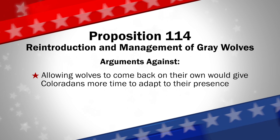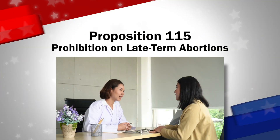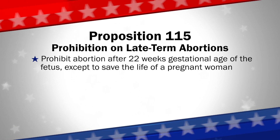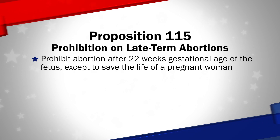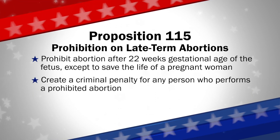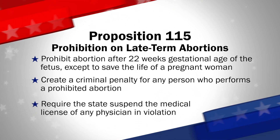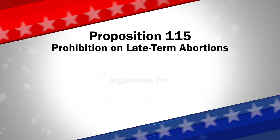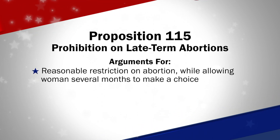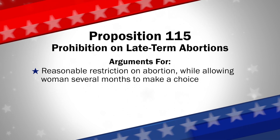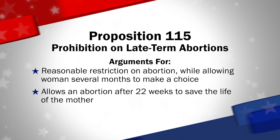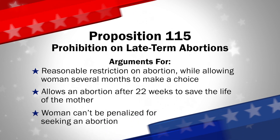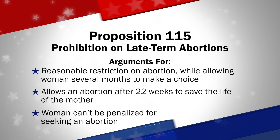Allowing wolves to come back on their own would give Coloradans more time to adapt to their presence. Next up is Proposition 115, a citizen initiative which proposes to prohibit abortion after 22 weeks gestational age of the fetus, except when an abortion is immediately required to save the life of a pregnant woman. It would create a criminal penalty for any person who performs a prohibited abortion, and require that the state suspend the medical license for at least three years of any physician who violates this measure. Those in favor of Proposition 115 say the measure places a reasonable restriction on abortion after viability, while still allowing a pregnant woman several months to make a choice about her pregnancy. The measure provides an exception allowing an abortion after 22 weeks when necessary to save the life of the mother, and in no case can a woman be criminalized for seeking an abortion.